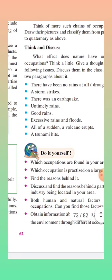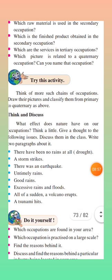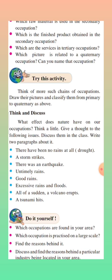Try this activity — think of more such chains of occupations, draw their pictures, and classify them from primary to quaternary. Think and discuss: what effect does nature have on our occupation? Consider the following issues and write two paragraphs about them. For example: there have been no rains at all, so primary occupations like agriculture will face drought. Or consider: a storm strikes, there was an earthquake, untimely rains, good rains for agriculture, excessive rain and floods, a volcano erupts, or a tsunami hits.